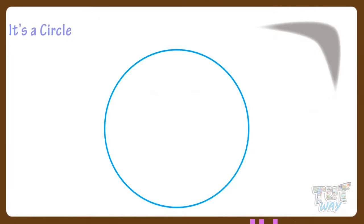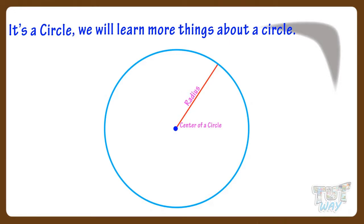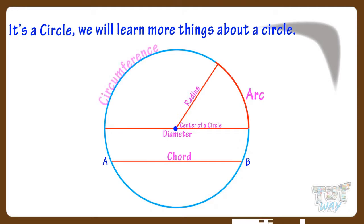Kids, we know it's a circle. Now we will learn more things about a circle, like center of a circle, radius of a circle, diameter of a circle, chord, arc, and circumference of a circle.